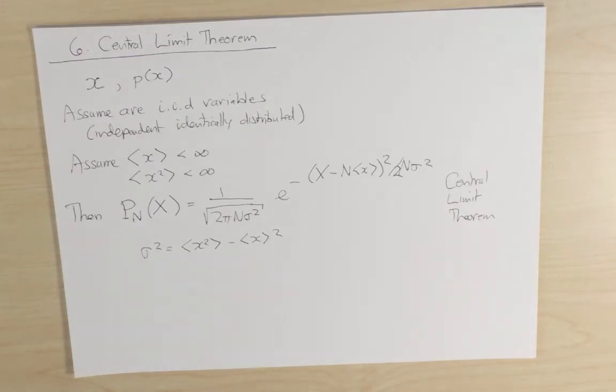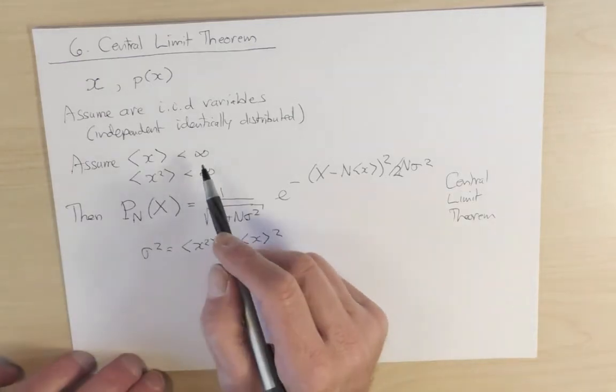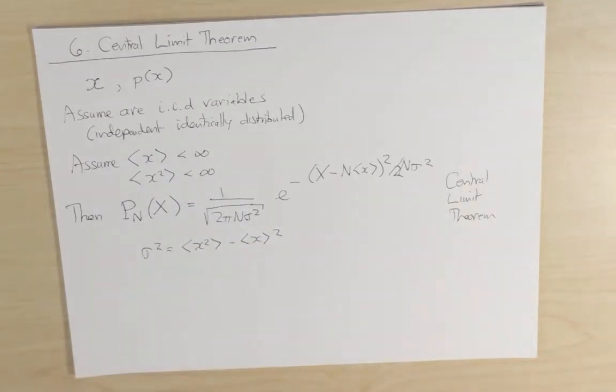It doesn't matter if we're talking about a nearest neighbor random walk in one dimension or some other type of hopping distribution. As long as the distribution obeys these two conditions, that the first and second moments are finite, then the distribution in the long-time limit is this universal Gaussian form.